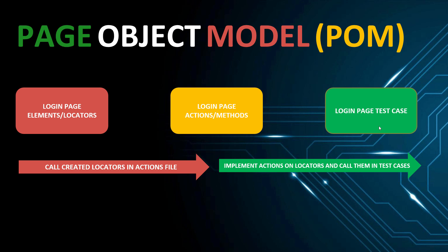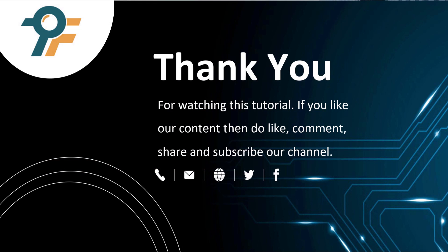In our upcoming tutorials, we will start by creating an architecture using Cypress, and then step by step implement this architecture. First we will create a complete single linear script file, and then convert it into the Page Object Model design pattern with three separate files. Thank you so much for watching — if you like the content, please like, comment, share, and subscribe. See you in the next tutorial!